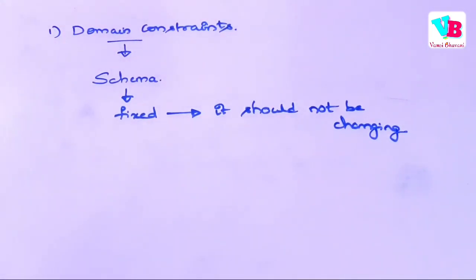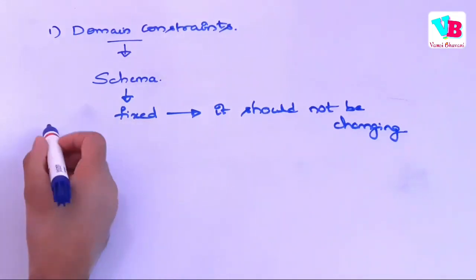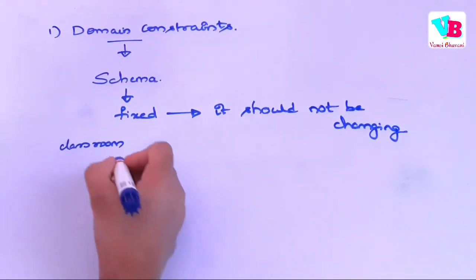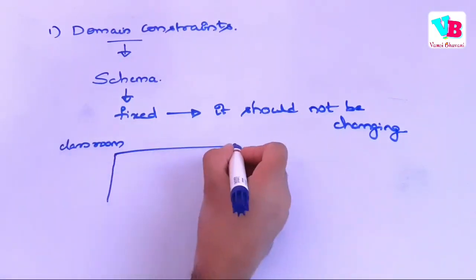Basically schema ante, it is a set of attributes. Let's say, classroom table or classroom relation hundi.